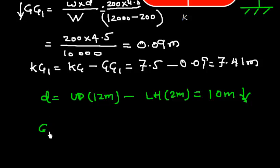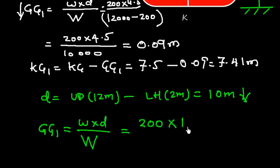So the shift in COG, that is GG1, is W into D divided by W. So here W is 200 and the D is the distance shifted, that is 10 meter, divided by 12,000. Now let's solve it: 200 multiplied by 10 divided by 12,000. So I get 0.166, so I can write 0.167.